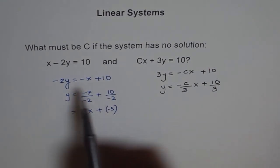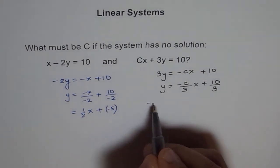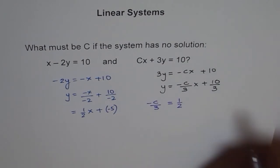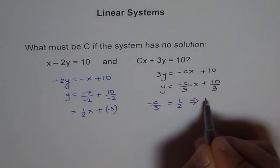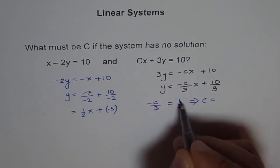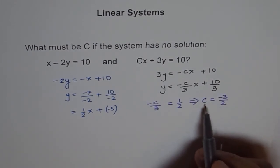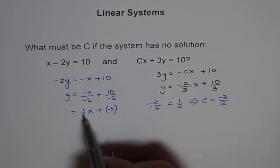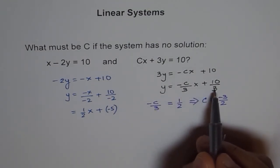So for this system to have no solution, minus C over 3 should be equal to half, right? Or C, which implies that C should be equal to, we can multiply this by minus 3, correct? Minus 3 over 2. So for a value of C equals minus 3 over 2, we will have same slope of these two equations and different y-intercepts.